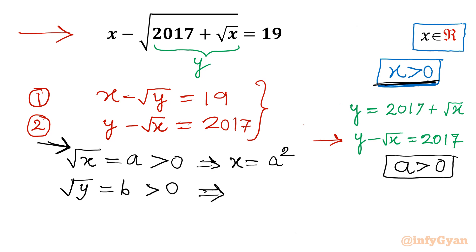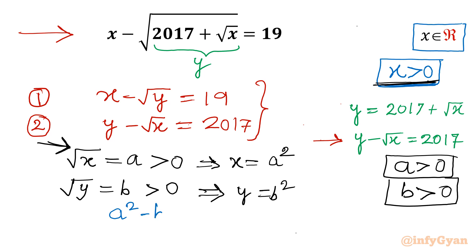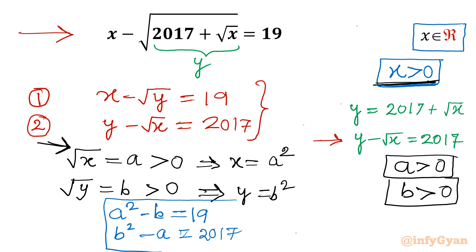Now for the square root y substitution, I will let it equal b. Since y is also positive for real solutions, b must also be positive. Taking the square, y equals b squared. Now I will frame equations with respect to variables a and b. The two equations are: a squared minus b equal to 19, and b squared minus a equal to 2017. We have to solve this system and find a, then x equals a squared.